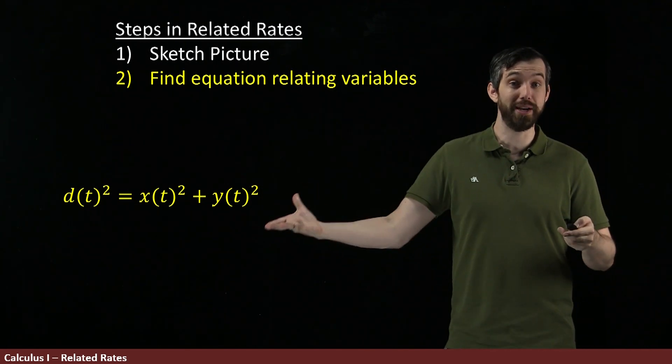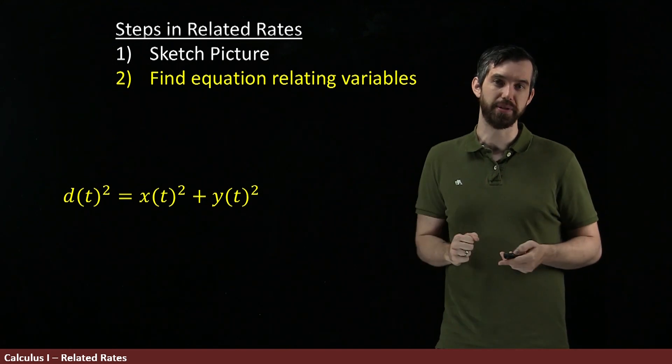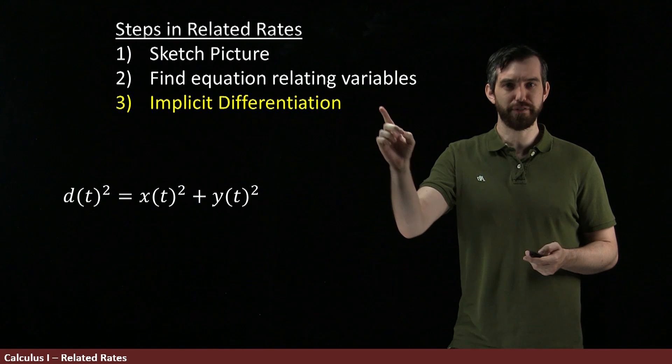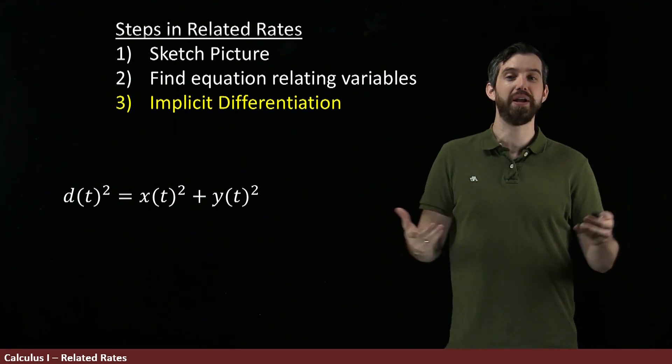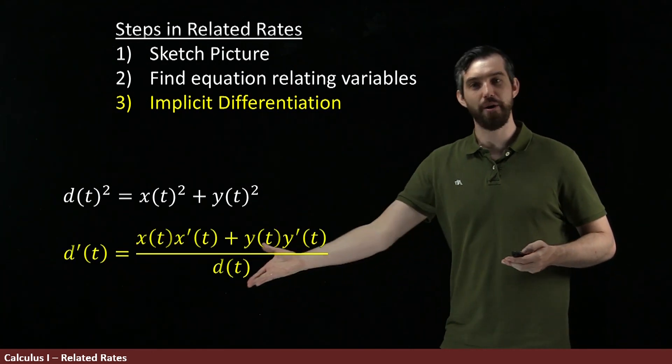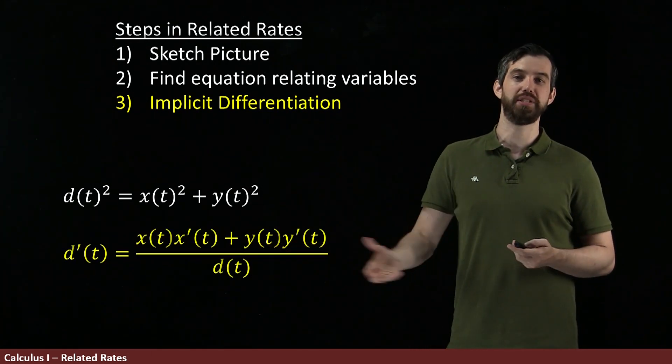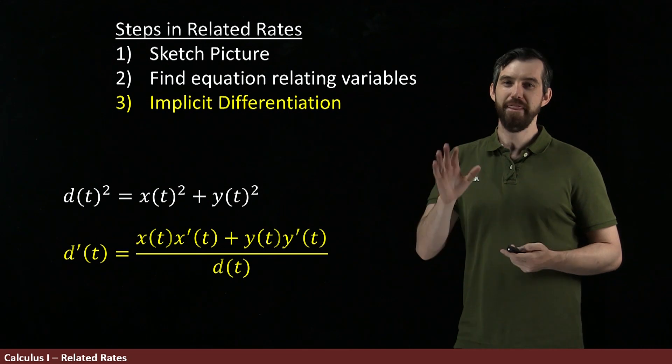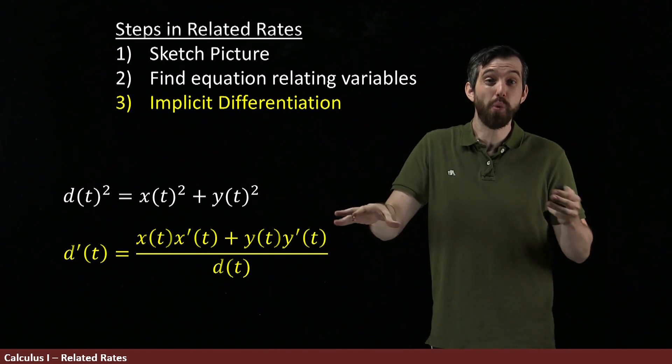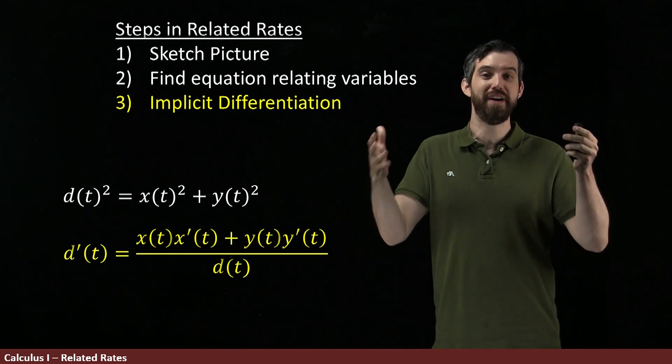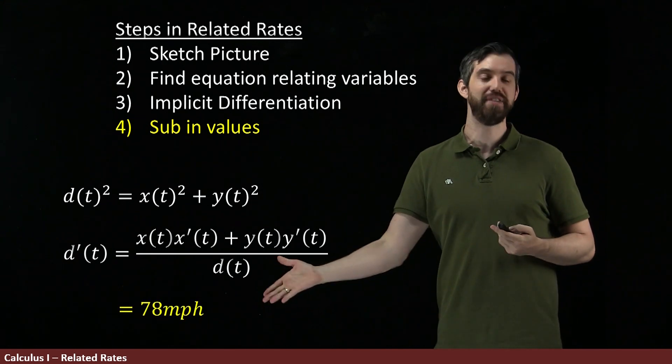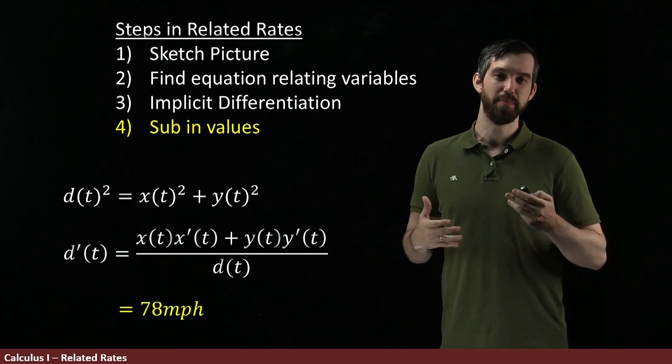But either way, you want to find some equation that relates those original variables. That's not quite enough, because we want to be able to differentiate to get a relate. We want to relate our rates. So we're going to take the derivative of whatever we have, and that's what we did here, where I went and found that my d prime of t was some particular function. And then after I've got my function, I'm not interested just in what the equation is. I want to know what it is at some specific values of data. And so I can go and sub in whatever the values. And that was how I eventually got down to the 78 miles per hour.